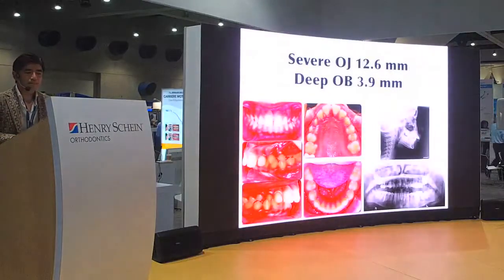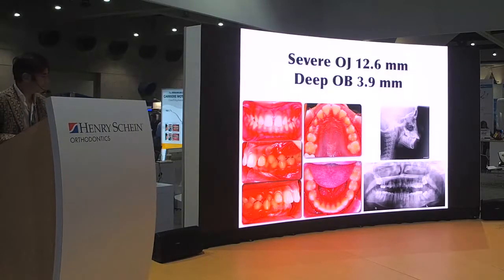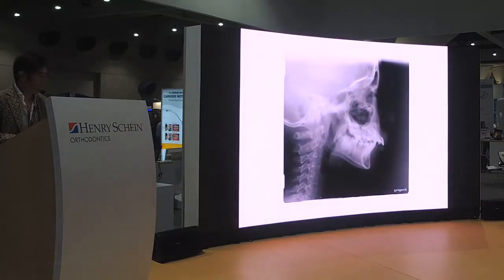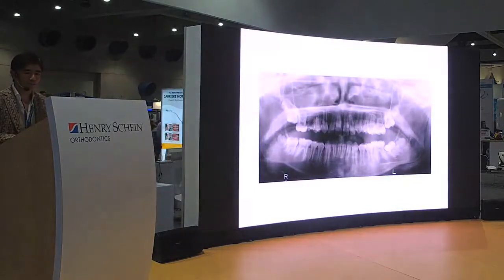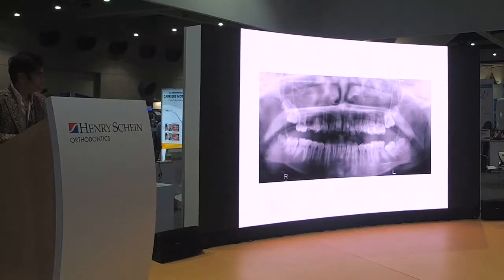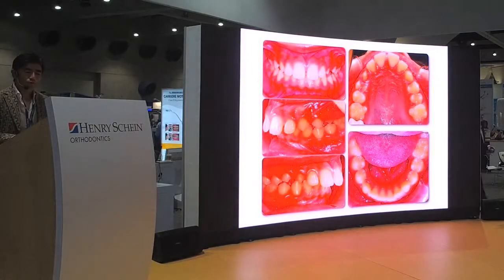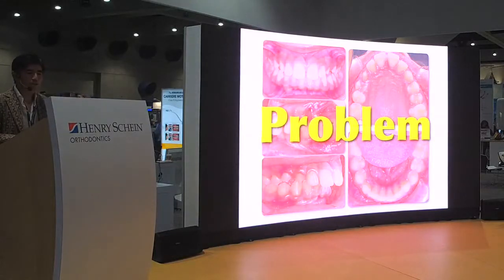This is a case where the patient is looking for Invisalign, but you can see this is a 12-millimeter overjet with a huge overbite. As noted, before second molar eruption is the perfect time to distalize molars. However, if we want to do sequential staging with aligners, there are certain problems for this particular case, specifically for Class 2 elastics.